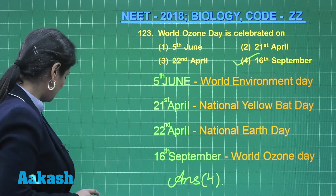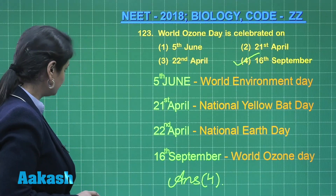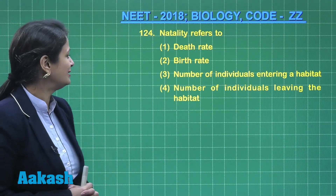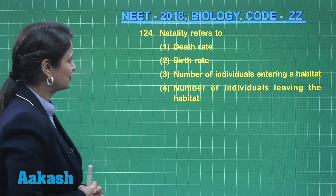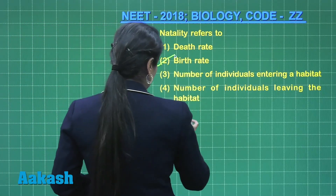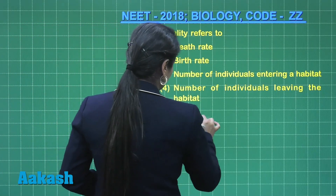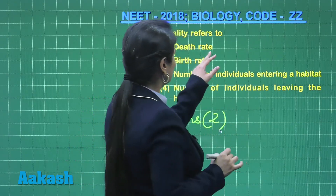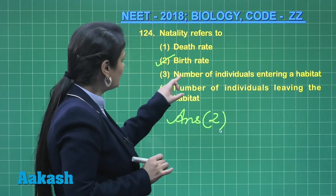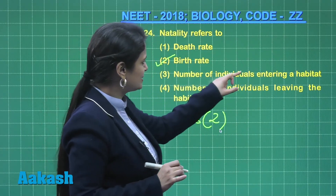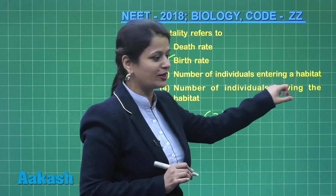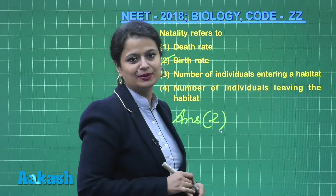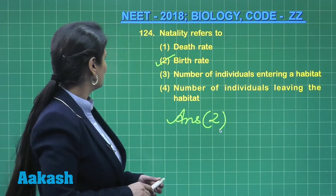Question number 124: Natality refers to — very easy question. Natality means birth rate, so the right answer is option number 2. Death rate is known as mortality. Number of individuals entering a habitat is immigration. Number of individuals leaving the habitat is emigration.